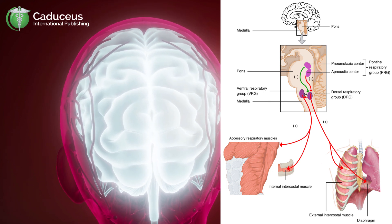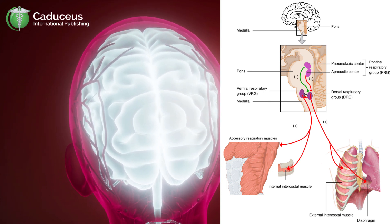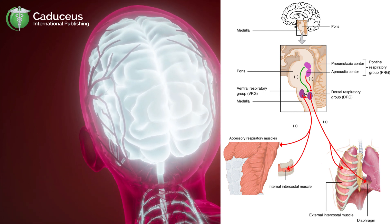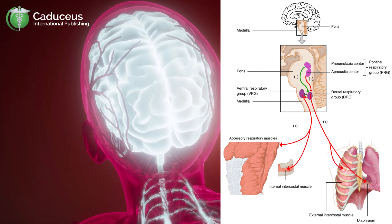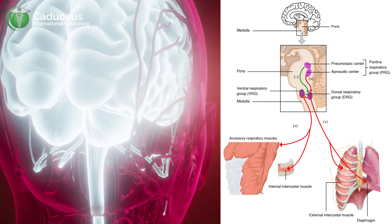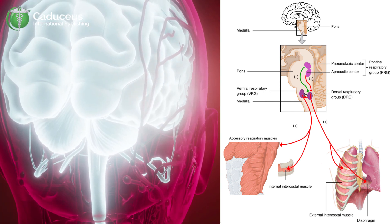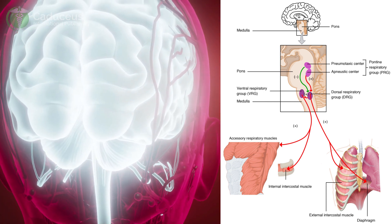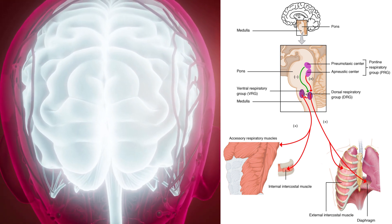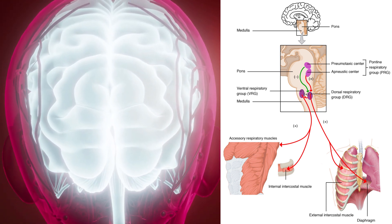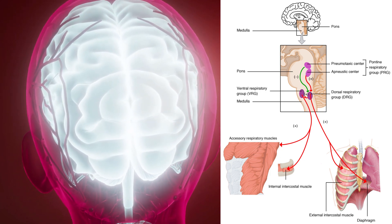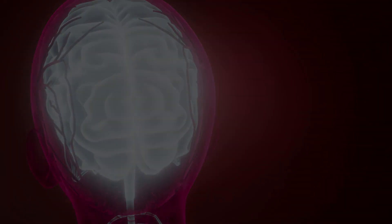The pons is also part of the brain stem. It lies directly superior to the medulla oblongata and is involved in controlling breathing processes as well as facilitating communication between different parts of the brain. These respiratory centers have groups of neurons that send impulses causing inspiration and expiration. These impulses travel through cranial nerves to the diaphragm and intercostal muscles to control the actions of breathing.